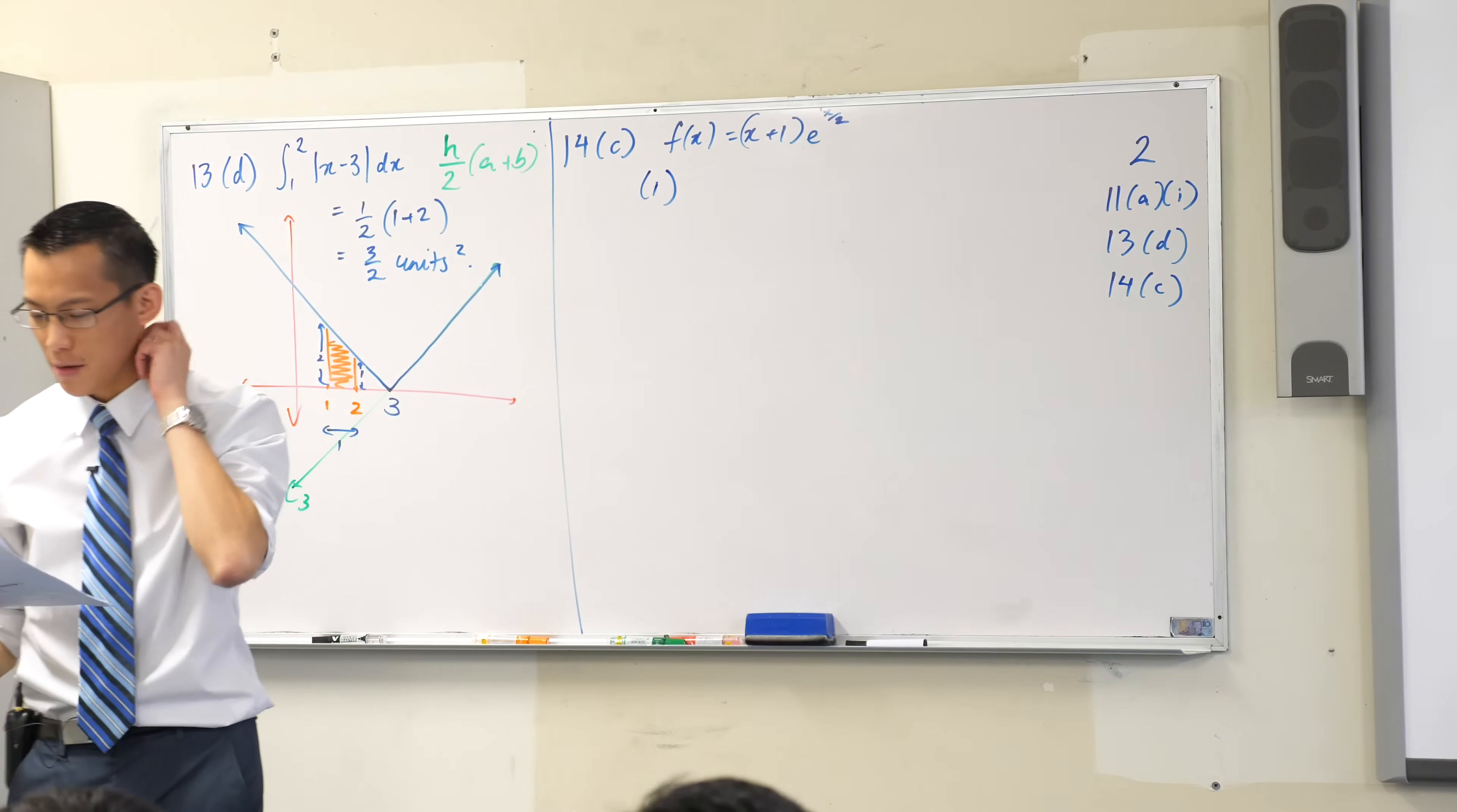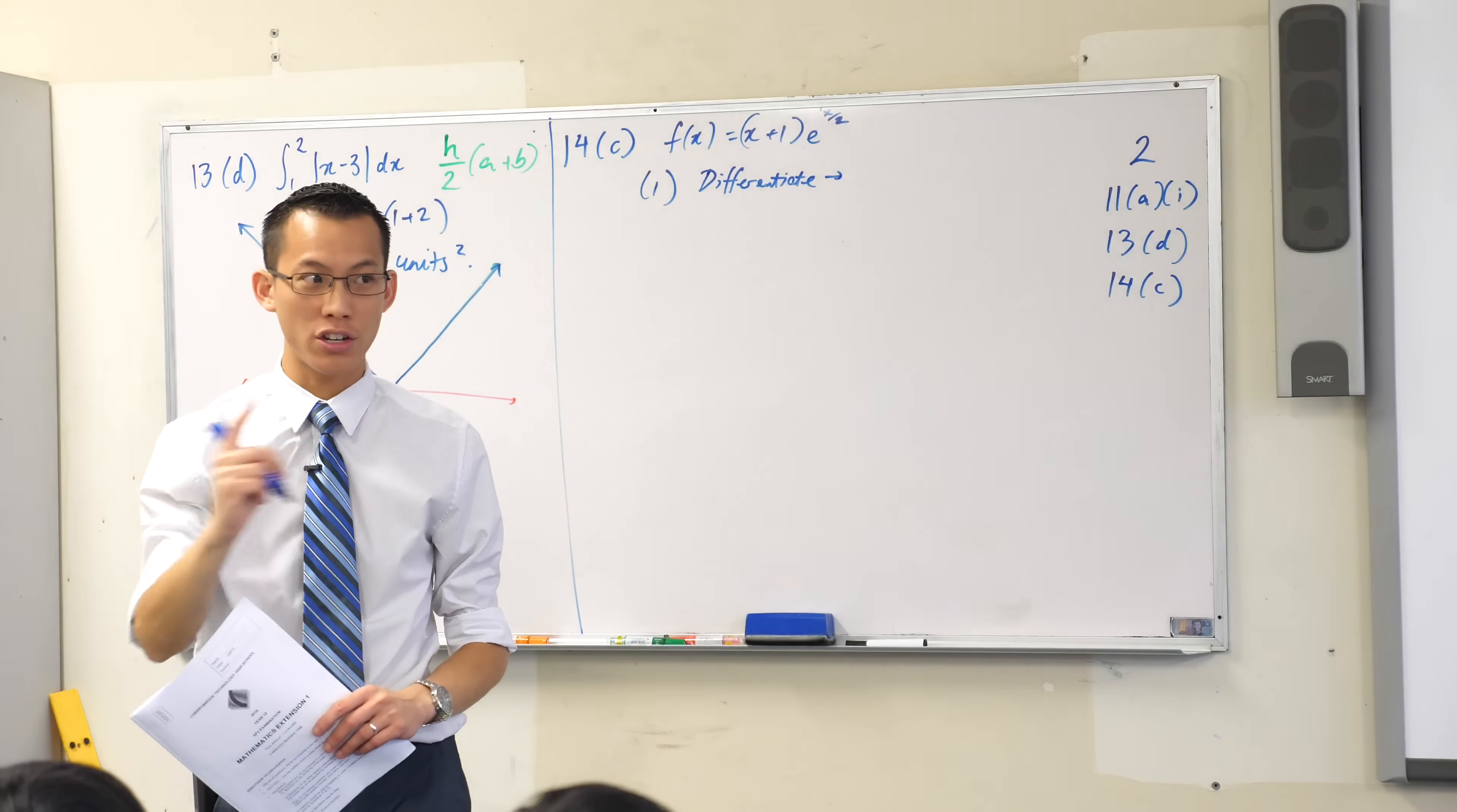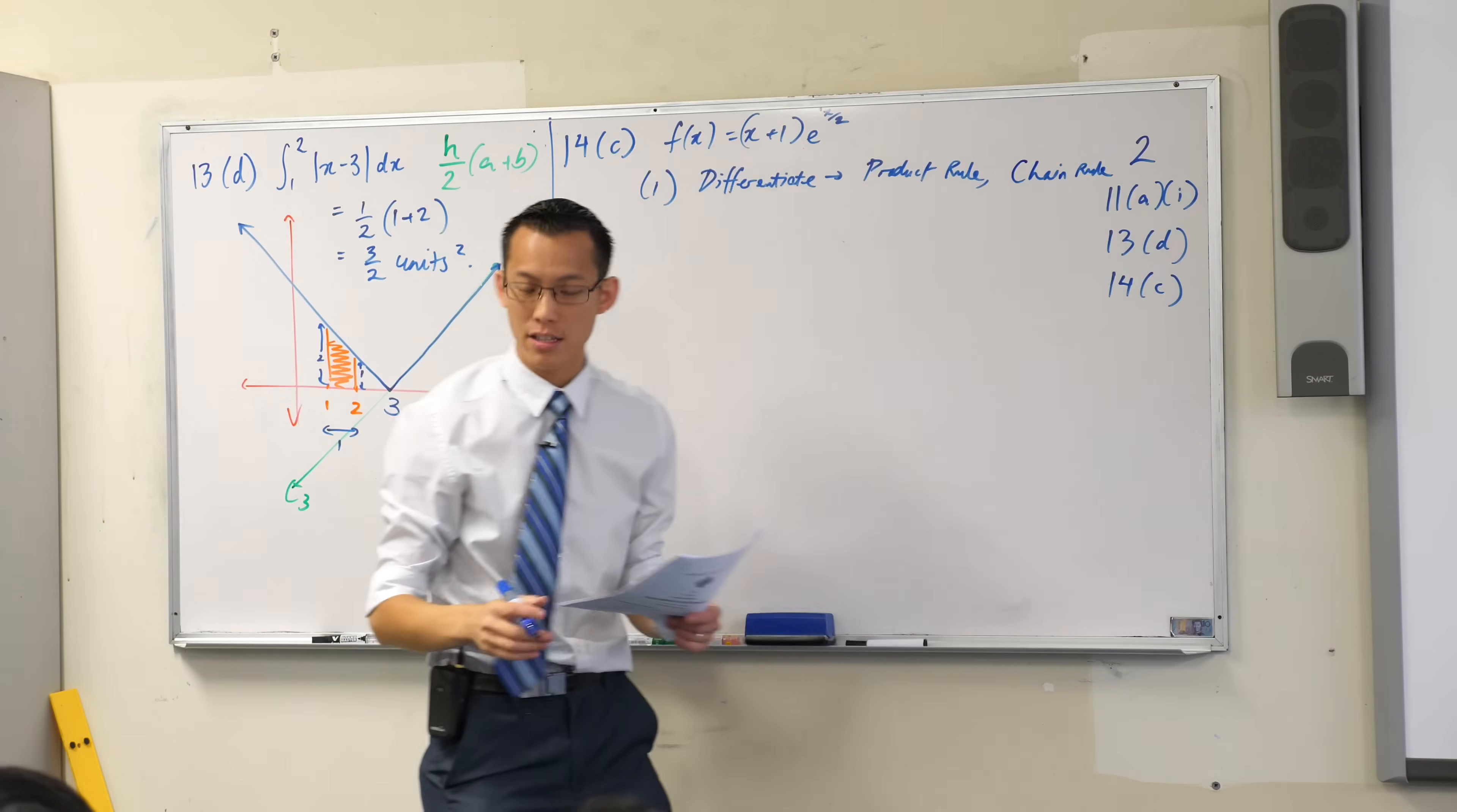Show that f of x has a minimum turning point at - so what's the very first thing you need to do? We're not even going to do the working, I just want the steps. You're going to have to differentiate, right? When you differentiate, you're going to need at least two rules in your head. You're going to need the product rule and there's another one. Yeah, you're also going to have to use a very simple version of the chain rule there for e to the x on two. So you've got those pieces of knowledge, that's fine.